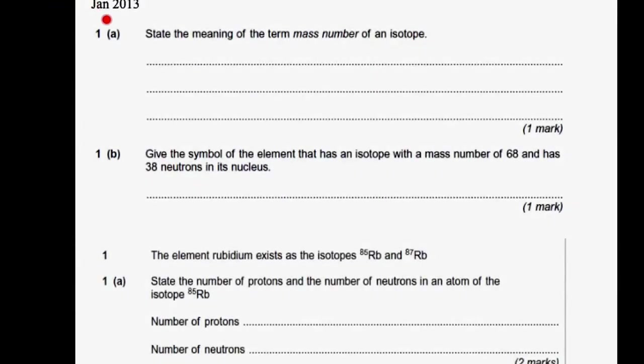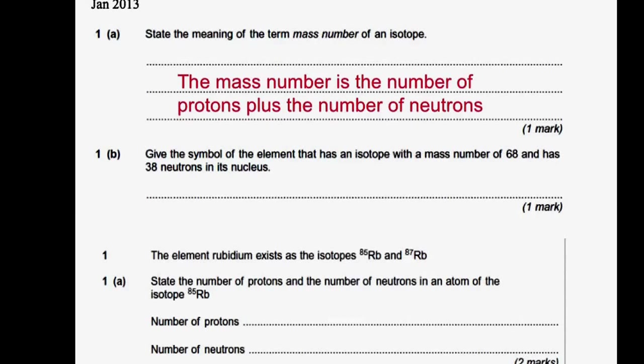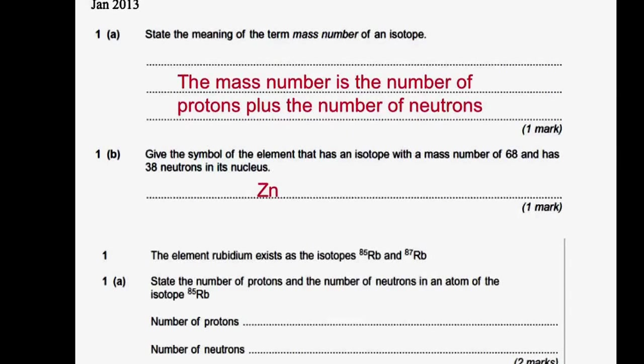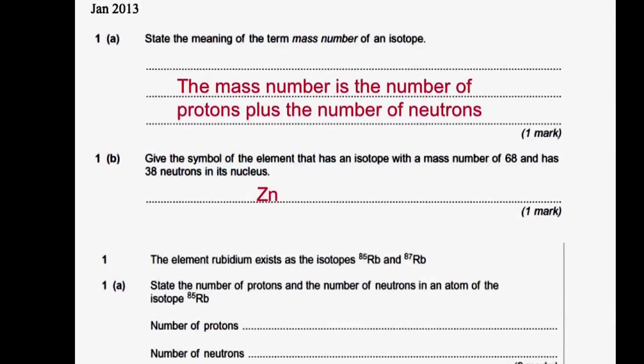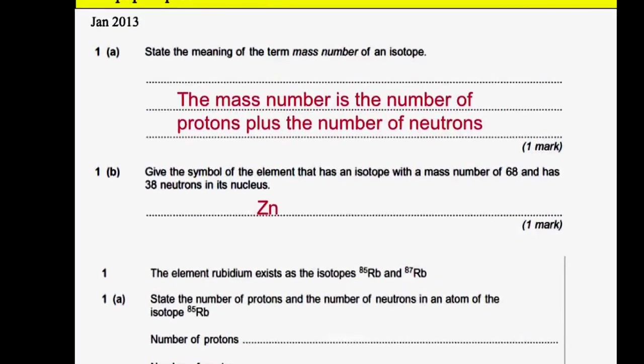Here are some questions from January 2013. The mass number is simply the number of protons plus the number of neutrons. For this question, work out the number of protons. The mass number is 68, minus the number of neutrons, 38, gives you 30 protons. Look up on the periodic table the element that has 30 protons and it's zinc.